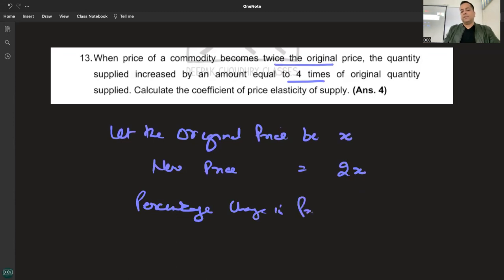Percentage change in price is 100%. The change is 100% - if something doubles, one becomes two, so change is 1 upon 1, 100%. If it was 10 and becomes 20, then change is 10 upon 10, 100%.